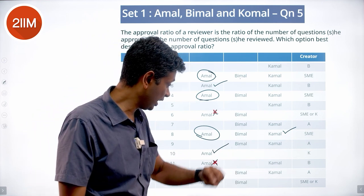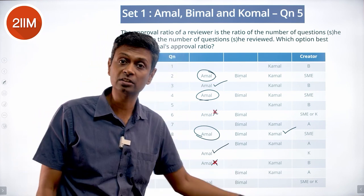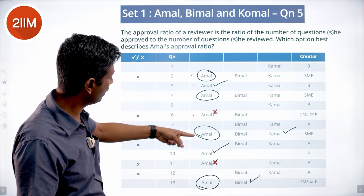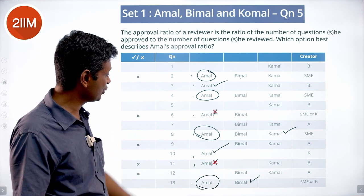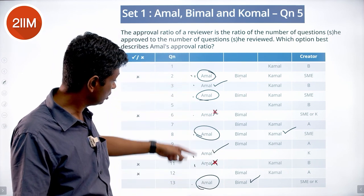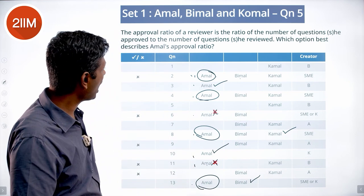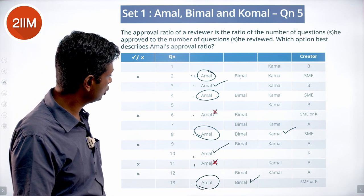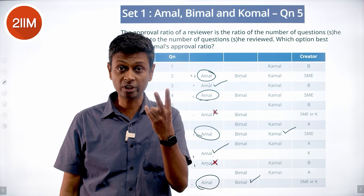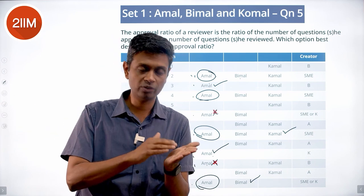Amal reviewed 8 questions. Of those, 2 are definitely approved (Q3, Q10), 2 are definitely rejected (Q6, Q11), and 4 could go either way. So Amal's approval count could range from 2 to 6 out of 8. The approval ratio ranges from 2/8 to 6/8, meaning between 0.25 and 0.75.